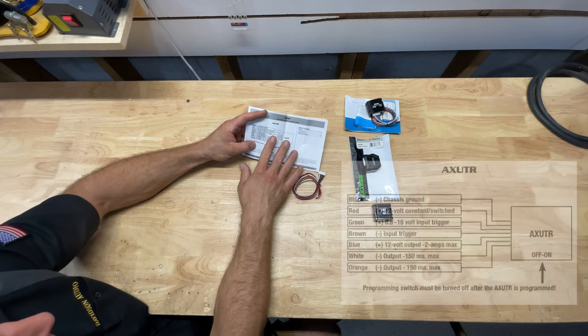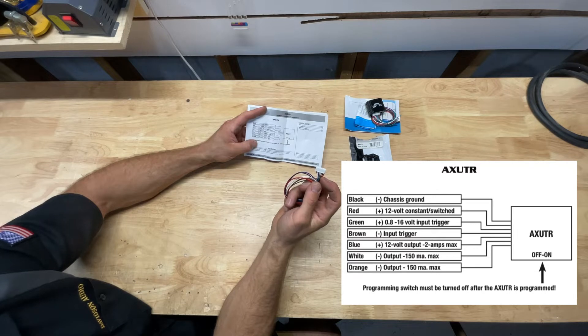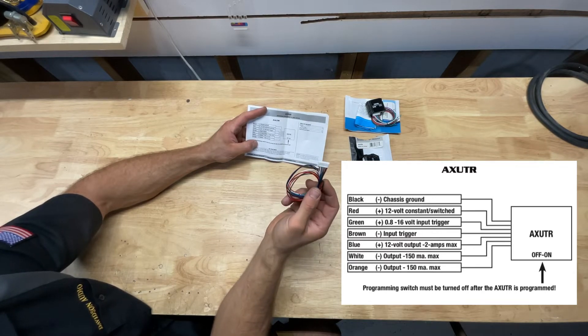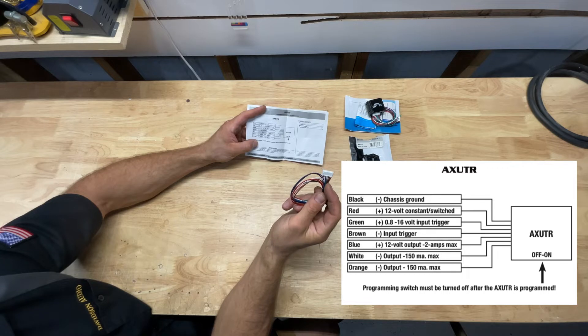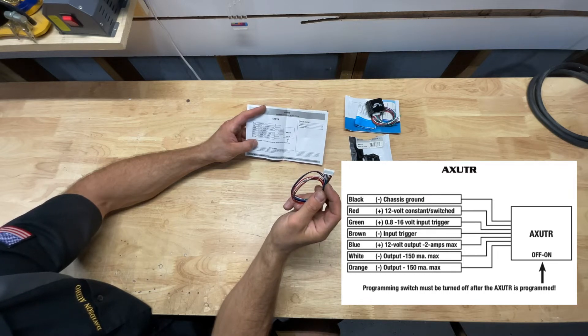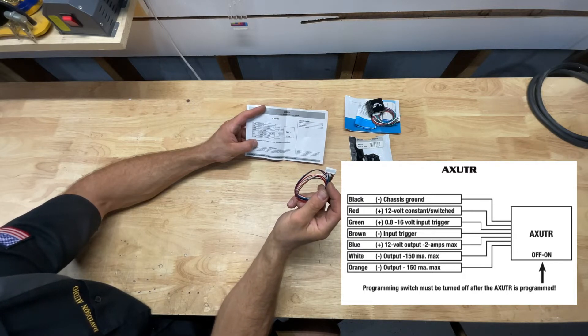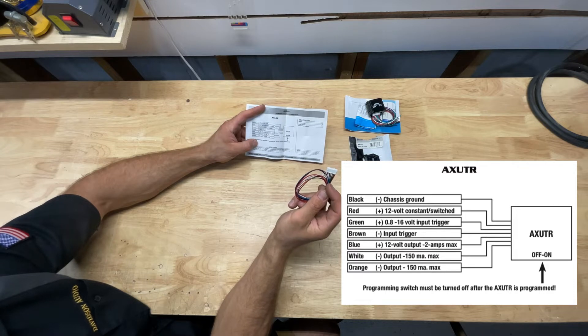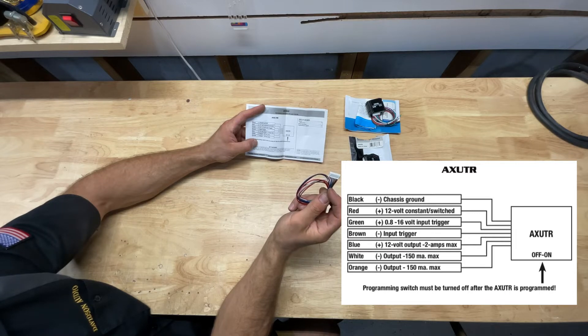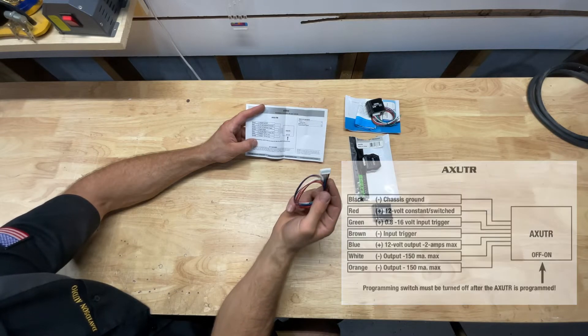So, real quick, they have seven wires on them. You got a red, black, green or brown, green, blue, white, and orange wire in here. So, the black is going to be your chassis ground. The red is 12 volt constant or switched. Your green is a positive 0.8 to 16 volt input trigger. The brown is a negative input trigger. The blue is going to be a positive 12 volt output, 2 amp max. The white and the orange are both negative outputs, 150 milliamp max.